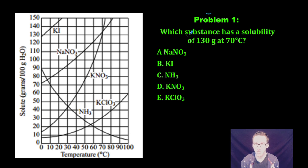As you take a look at problem number one, we want to know which substance has a solubility of 130 grams at 70 degrees Celsius. Easy enough, we're just going to head to 70 degrees Celsius and check which substance has a solubility of 130 grams. Our best answer choice here would be potassium nitrate, and we're done with problem number one.